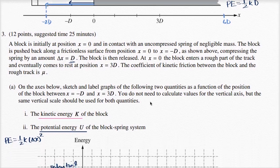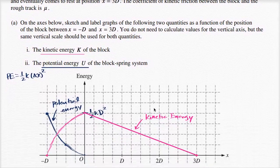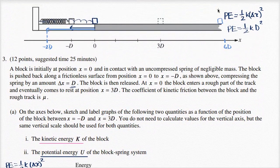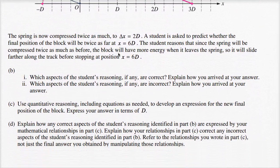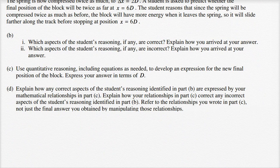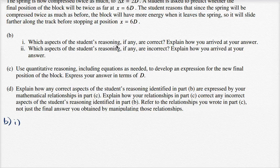Now let's read and see what the questions are here. And actually let me put a question mark here, since I'm not sure if that is exactly right. So part B1, let me do this. So we're in part B1. It says which aspects of the student's reasoning, if any, are correct? Explain how you arrived at your answer. And then part two says which aspects of the student's reasoning, if any, are incorrect? Explain how you arrived at your answer.